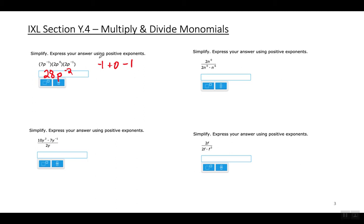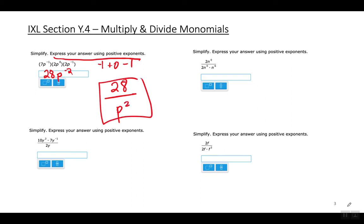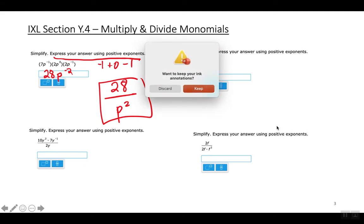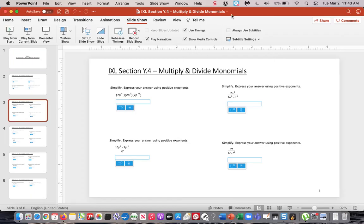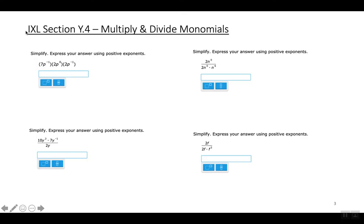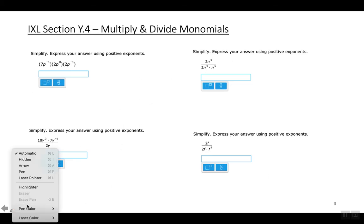Notice that you need to express your answer using positive exponents — your final answer cannot have negative exponents. So when you get rid of the negative exponent, your answer is 28 over P to the second power.